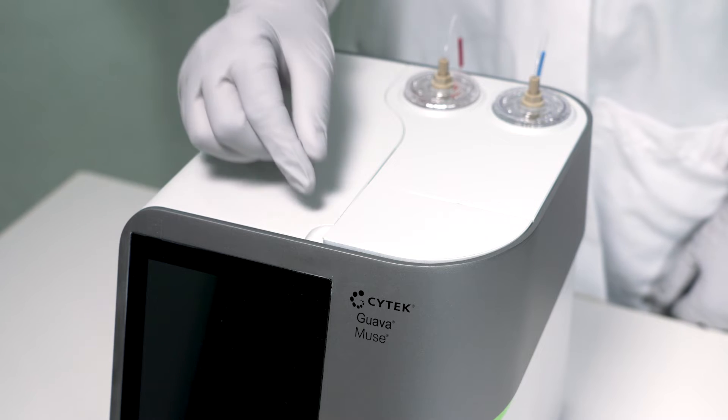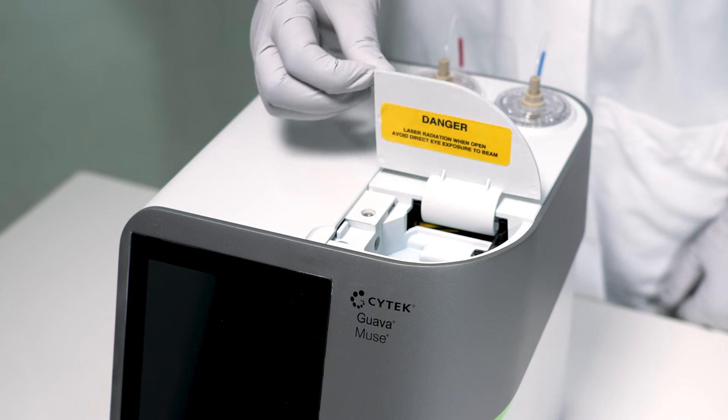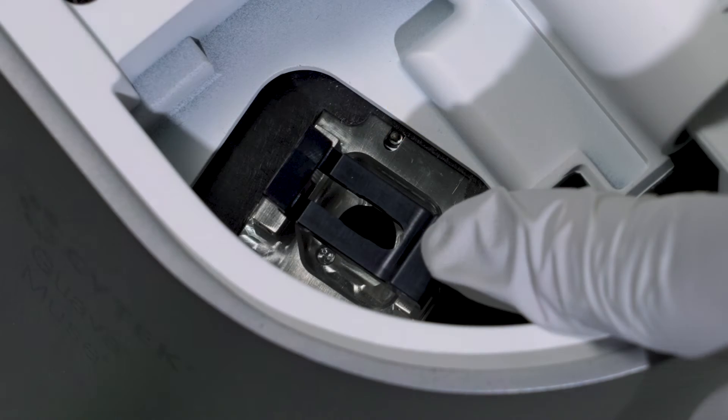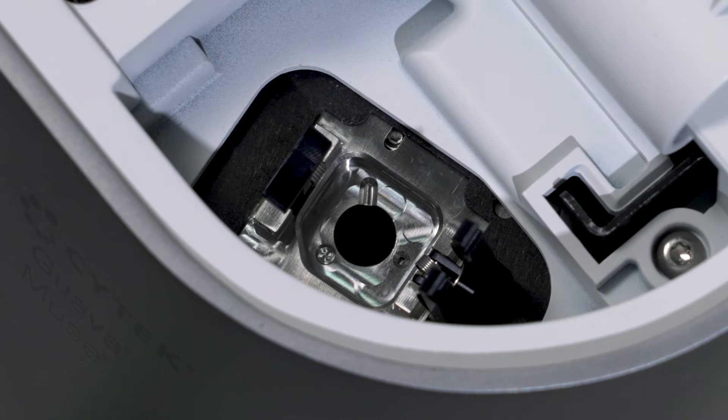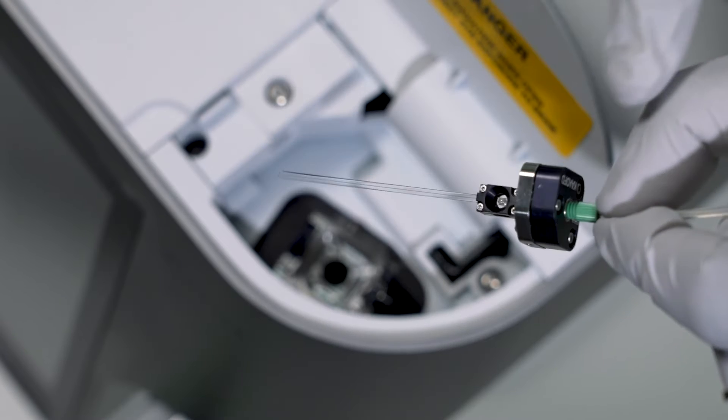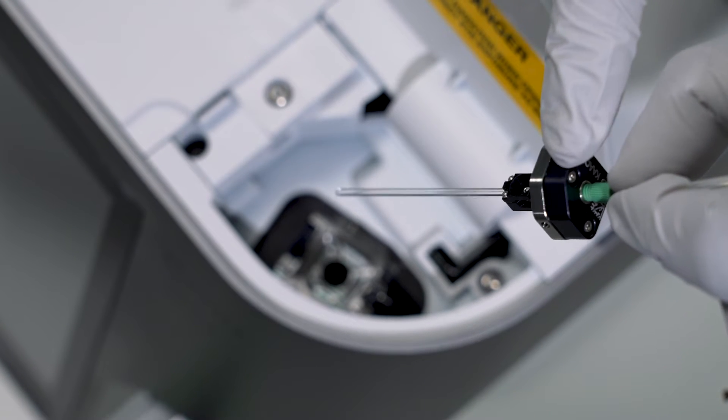Open the hatch on top of the instrument and locate the flow cell chamber. Press down on the left edge of the clamp. The forked side will pop up automatically. This is where you will install the flow cell.